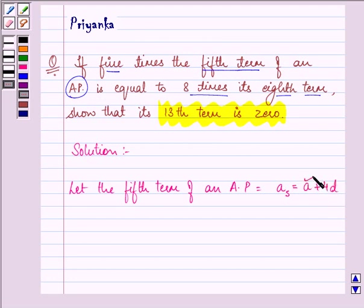where A is the first number of the arithmetic progression and D is the difference between the two consecutive numbers of an AP. Similarly, the 8th term of an AP is equal to A plus 7D.